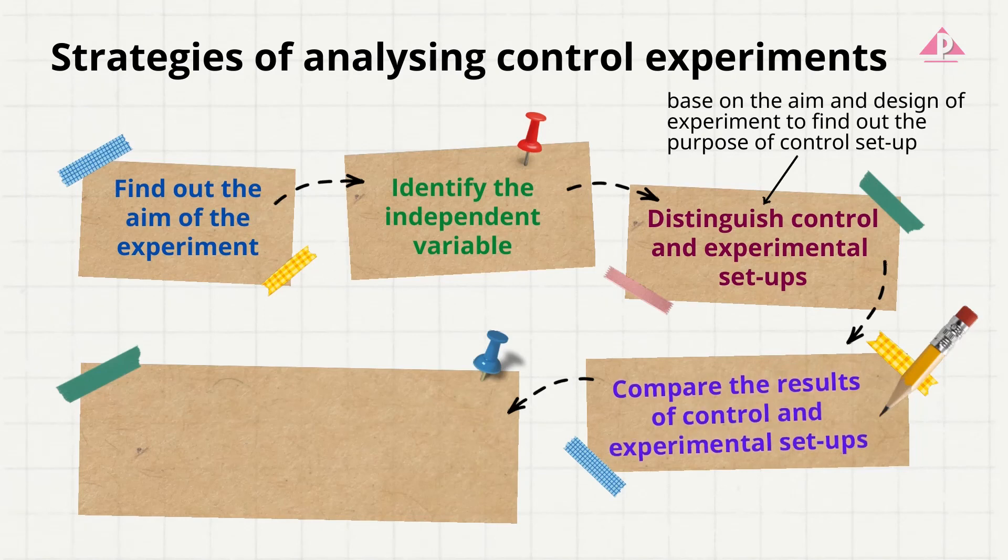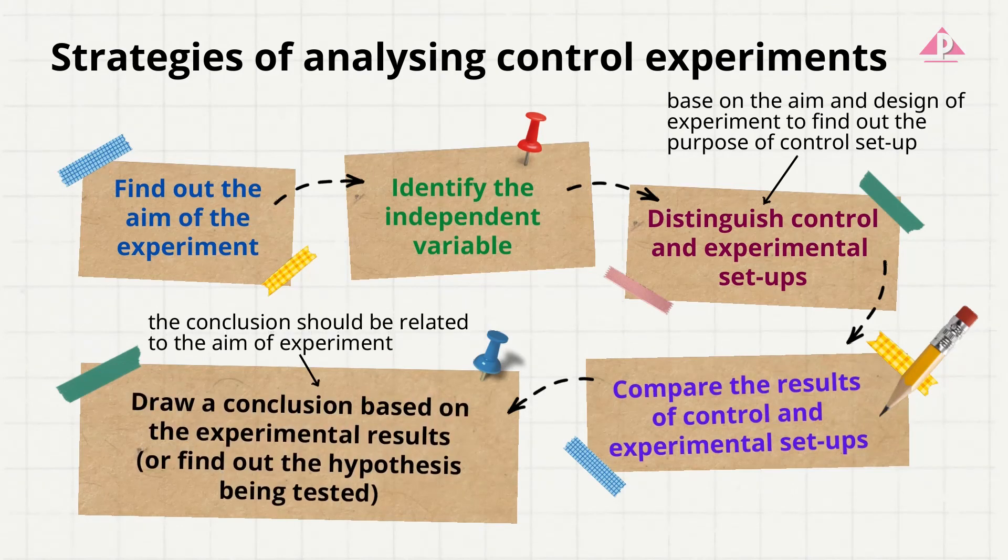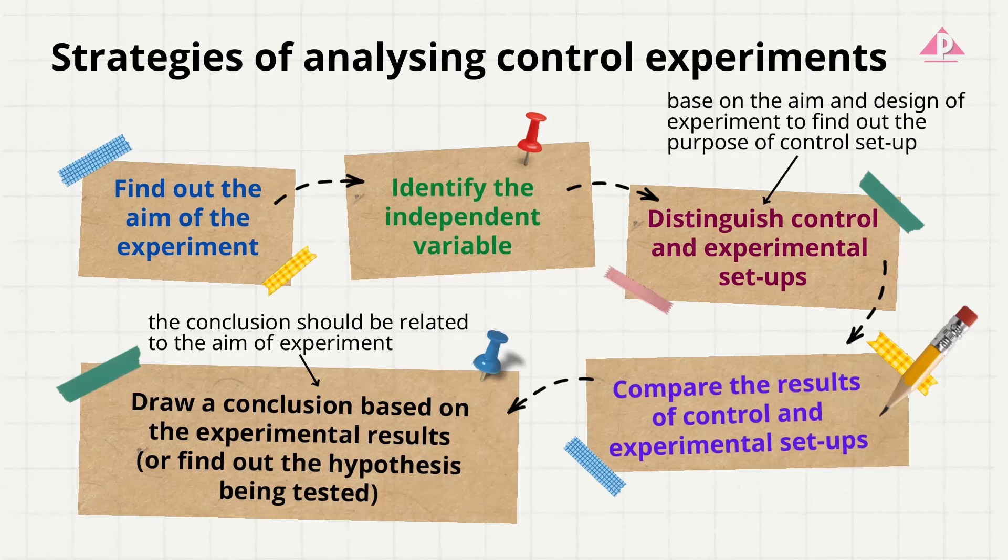Compare and contrast the results of the control setup and the experimental setup. We can then draw a conclusion based on the results and the aim of the experiment. In most situations, the control setup is used to show that the result of the experimental setup is affected by the independent variable. After understanding the functions of different setups, we can choose suitable ones to test a hypothesis or draw a conclusion.